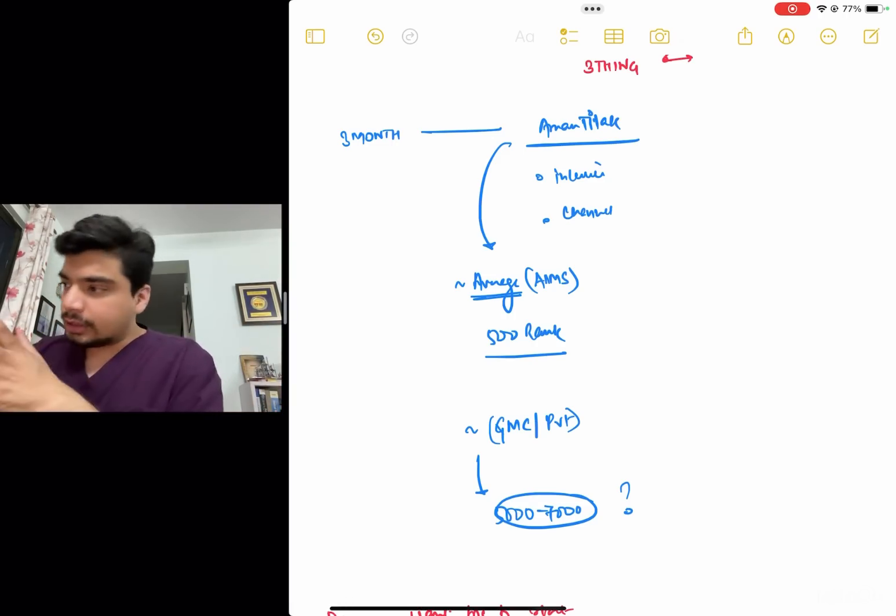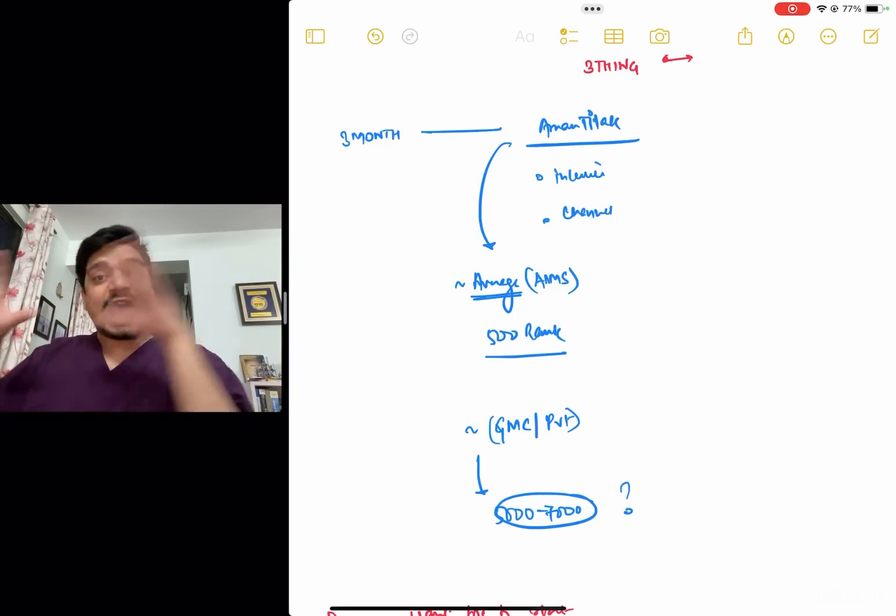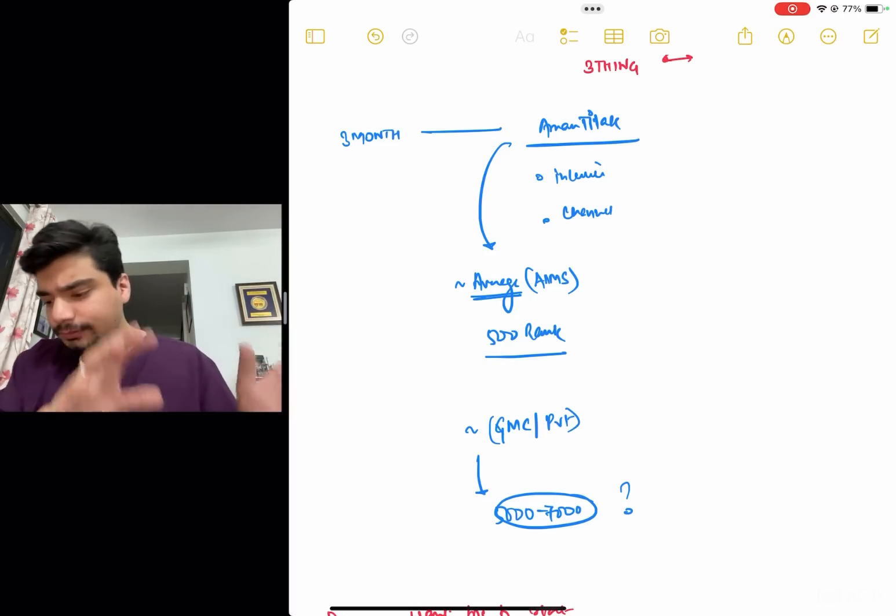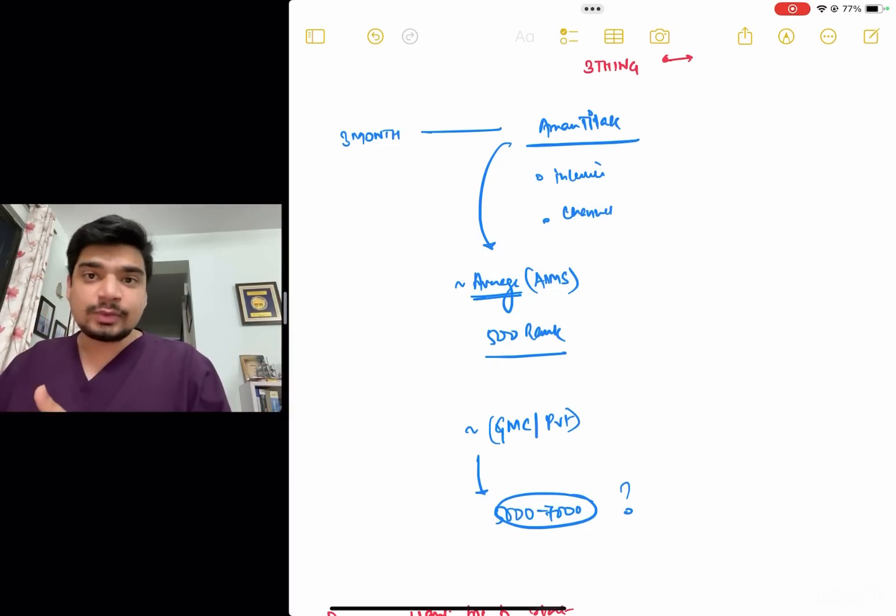doesn't that mean that revision videos plus previous year questions can definitely if you do it thoroughly in the last 3 months, proper solving previous year questions, the explanation of the previous year questions added to your revision notes and the revision notes, if you do this once and revise it once or twice, doesn't it mean that you also will be able to probably get a 5000 to 7000 rank if he got a 500 rank, right?